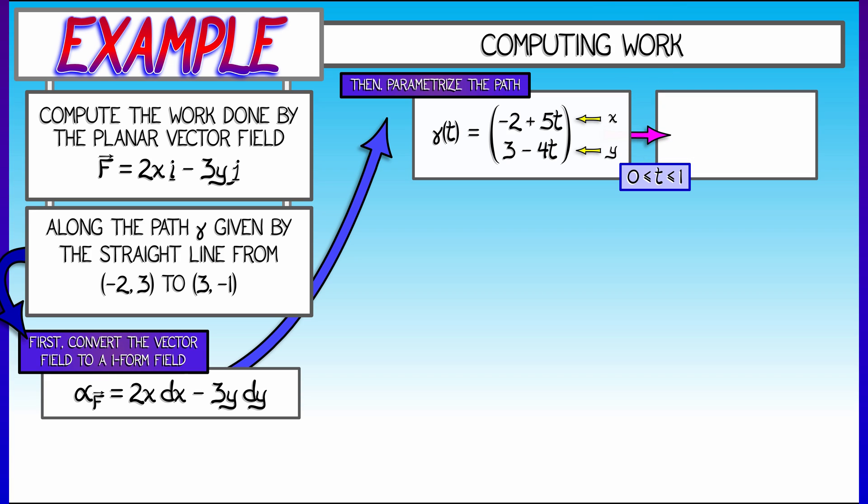Now, the derivative of gamma, because this is a really simple parametrization, is going to be a constant. It's going to be the constant vector 5, negative 4.